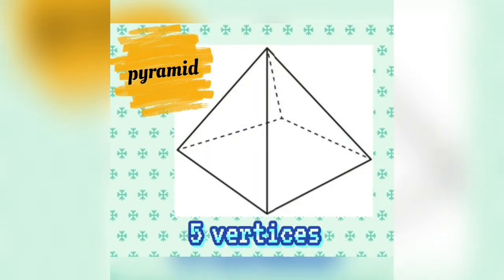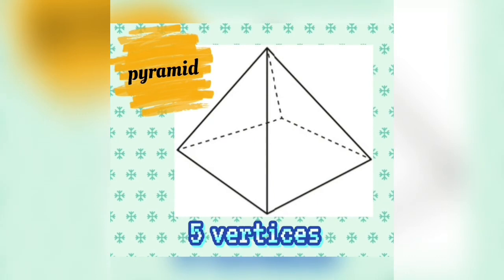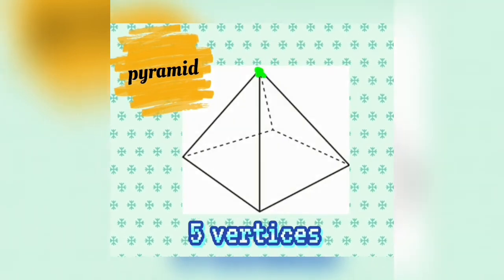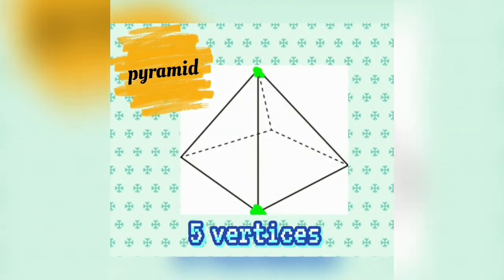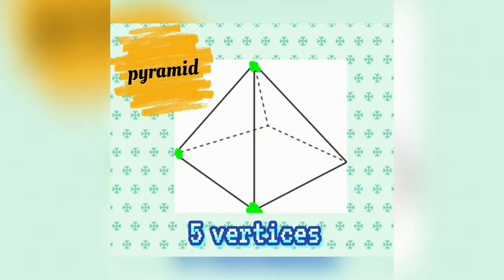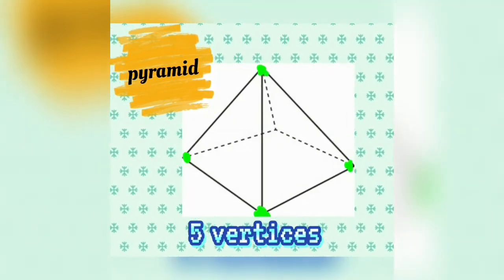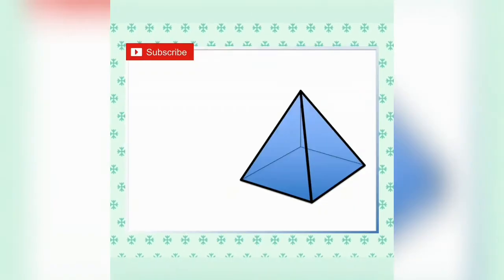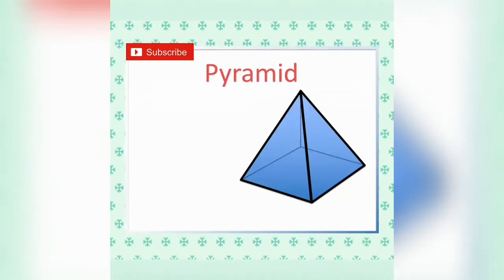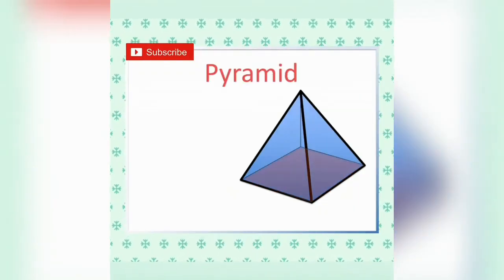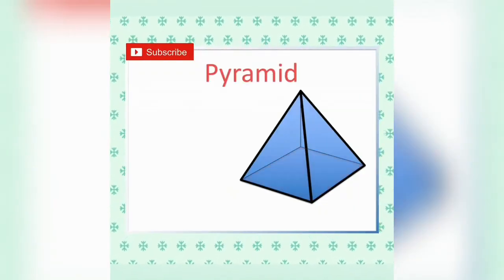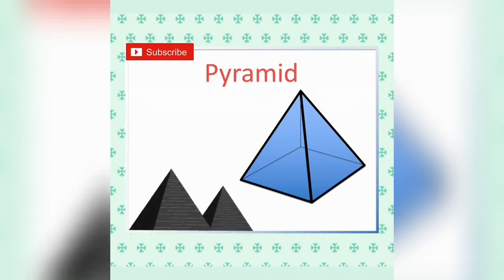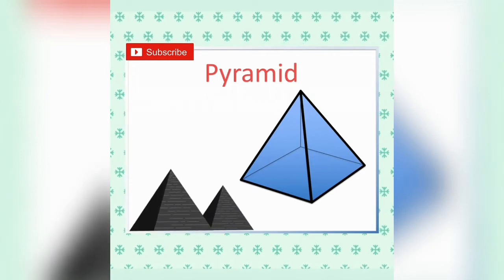It has five vertices — one, two, three, four, five. This is an example of a pyramid: the Pyramid of Giza.